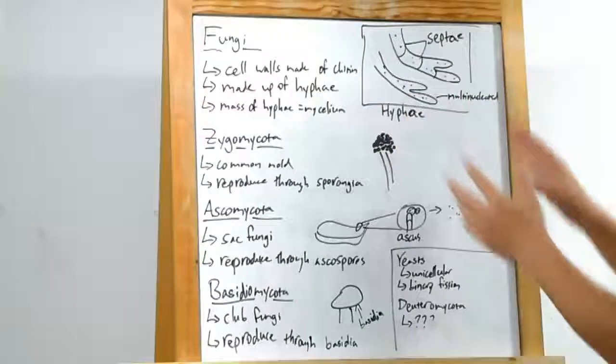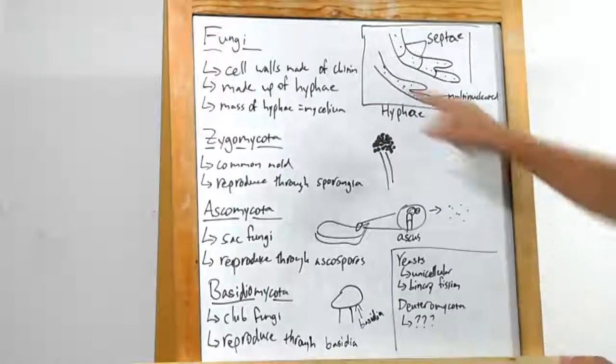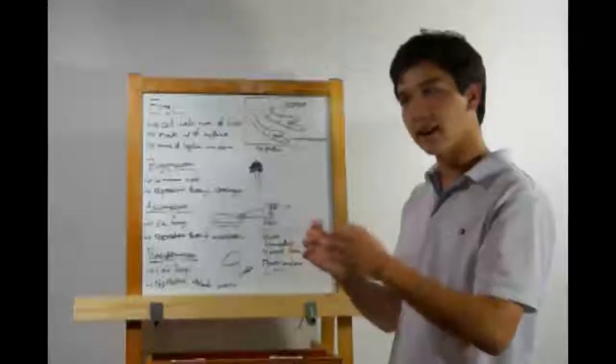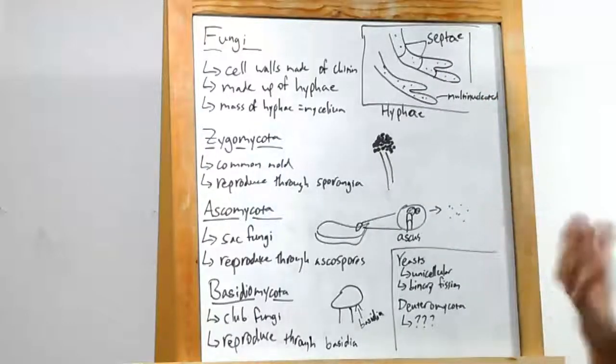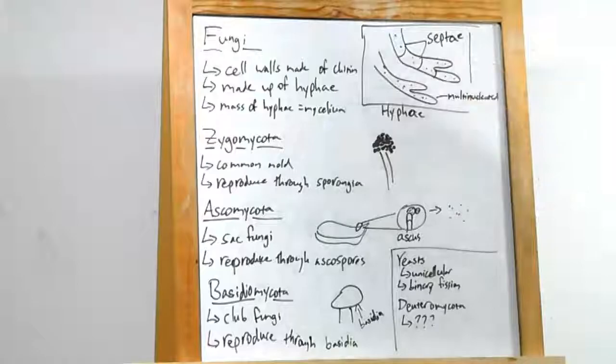Looking up close at hyphae, there are two different types. There's the multinucleated type, which does not have separations between cells, and the one with separations between cells, septate.